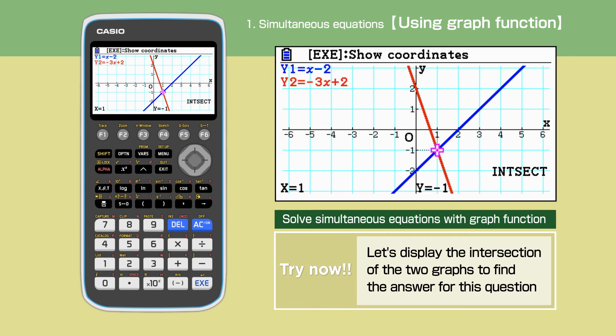The coordinates of the intersection are displayed at the bottom of the screen. The answer is X equals 1 and Y equals minus 1, which is the same as what we got in the previous example.